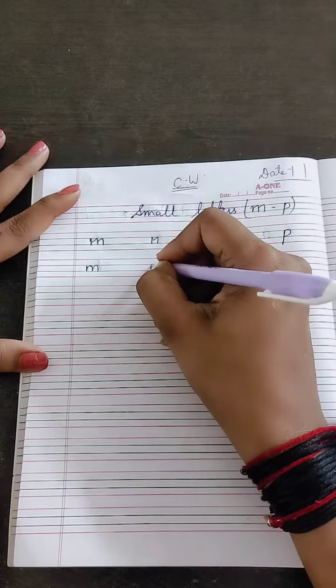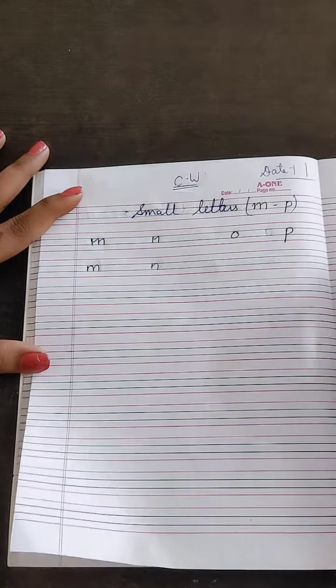N for nest. One standing line and make one curve. N for nest.